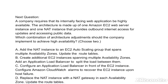Next question: a company requires that its internally-facing web application be highly available. The architecture is made up of one Amazon EC2 web server instance and one NAT instance that provides outbound internet access for updates and accessing public data. Which combination of architecture adjustments should the company implement to achieve high availability?